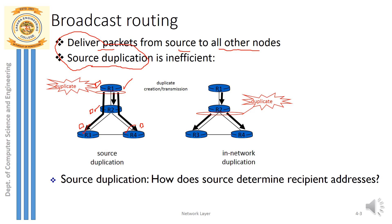So what R1 should do is create three duplicate copies of the packet which can then be broadcasted to all routers in the network. But is it practically possible? If the network is very large with thousands or millions of routers, can a source create a million copies of packets and broadcast? Practically it is impossible, so we need another technique.